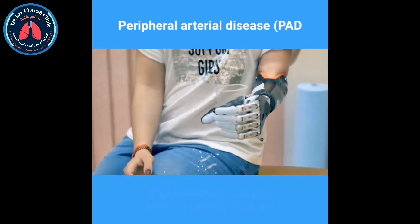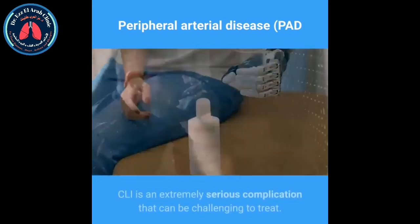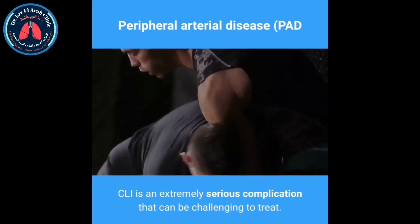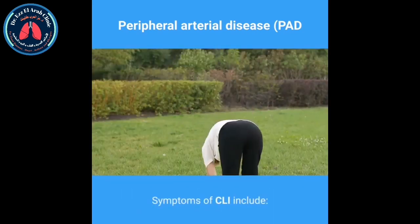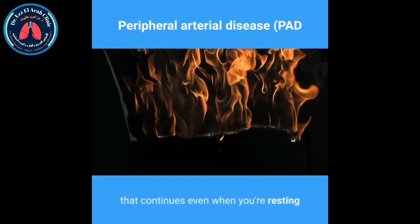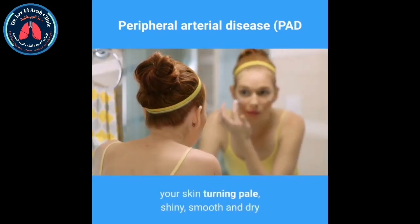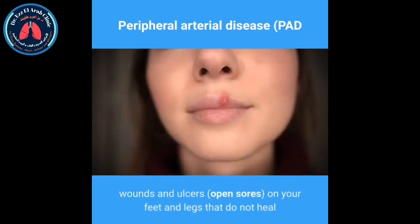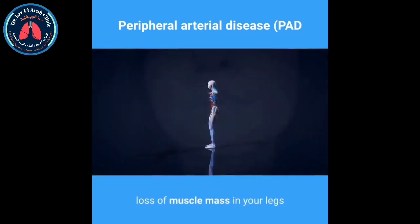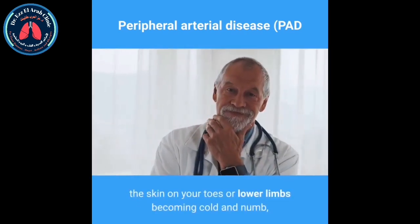If the blood flow to the legs becomes severely restricted, critical limb ischemia, or CLI, can develop. CLI is an extremely serious complication that can be challenging to treat. Symptoms of CLI include a severe burning pain in your legs and feet that continues even when resting, your skin turning pale, shiny, smooth and dry, and wounds or open sores on your feet and legs that do not heal.